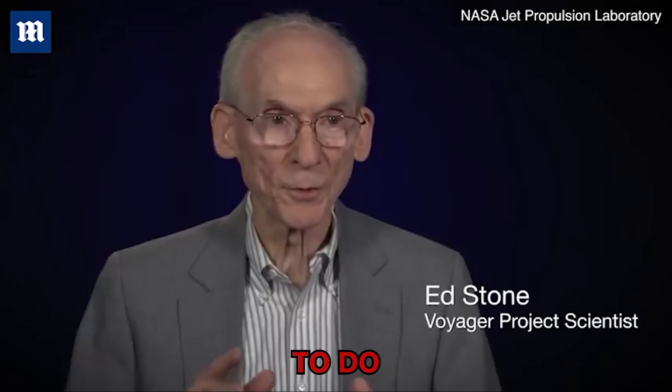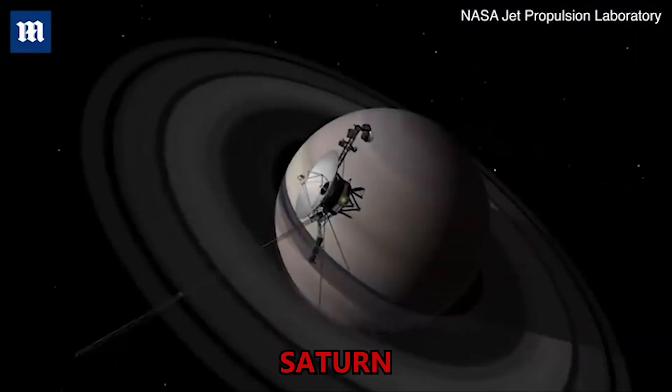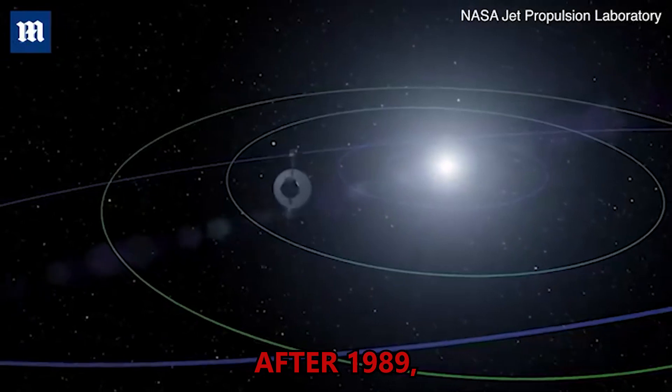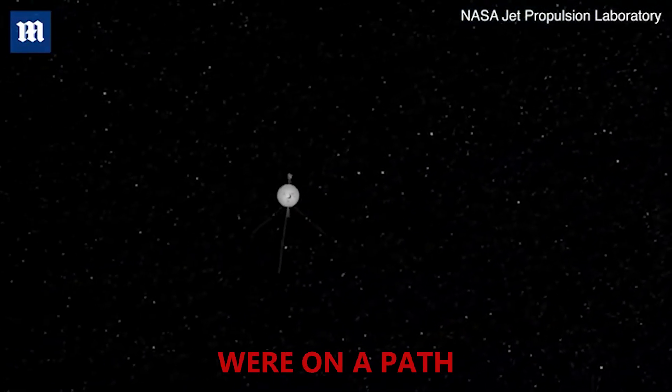Voyager 2 was the one that was chosen to do the grand tour, that is to fly by Jupiter, and then Saturn, and then Uranus, and then Neptune. And then after 1989, we began what is now called the Voyager interstellar mission. We were on a path we hoped to get to reach interstellar space while we still had power on the spacecraft to transmit the data back.